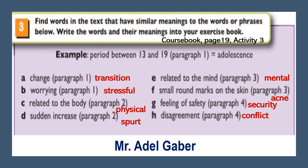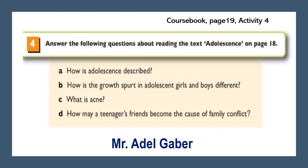It is very important to create a special place to record new vocabulary — a vocabulary notebook where you can write down new words, their meanings, and sentences containing the new words. Look at your course book page 19, Activity 4. Answer the following questions about the reading text on adolescence on page 18 of your course book. Now stop this video and take your time. Read the text well and find the answers to these questions.